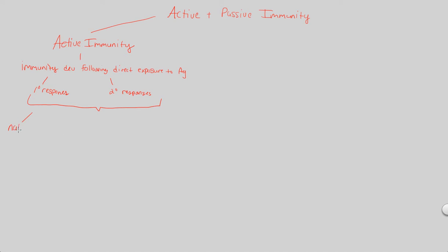The first form is natural active immunity. This is when simply a pathogen — a disease-causing agent — enters the body and your body responds to it. This is a natural encounter with a pathogen that elicits an immunological response, causing a primary or secondary response. That's what causes active immunity to form. This is the natural form of active immunity.